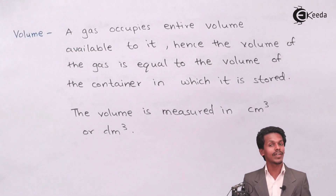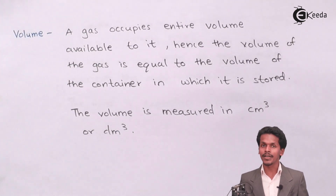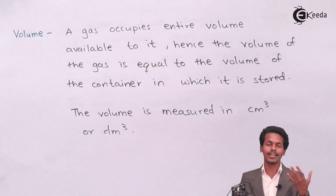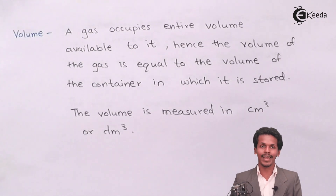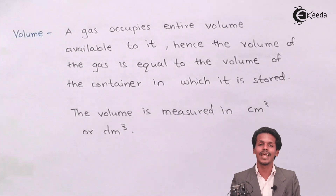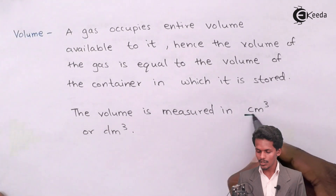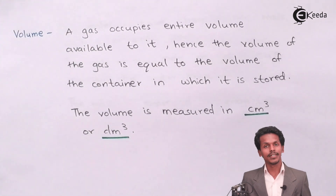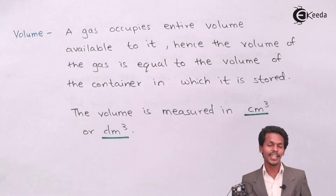This is not the case with liquid. Liquid will only occupy the shape of that container in terms of volume, but not like gas, because liquid settles down while gas doesn't settle down — it spreads in the container equally, making the volume of the gas equal to that of the container. Volume is measured in cm³ or dm³, where dm³ equals liters.